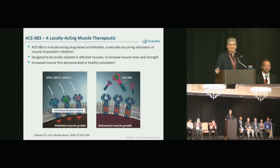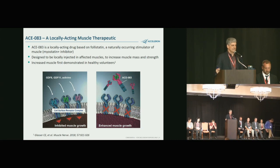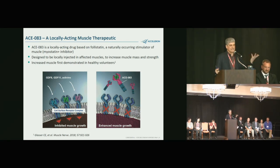The drug works by binding myostatin so it can't bind to the muscle cell and inhibit muscle growth. It takes advantage of a naturally occurring inhibitor of myostatin called follistatin — one of the most potent ways to block myostatin. Making follistatin last in the body is challenging, but they found a way to make it sticky so it stays in the muscle and breaks down rapidly once it enters circulation.